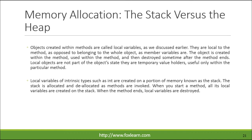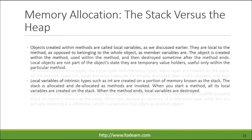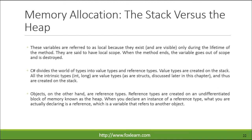Local variables of intrinsic types such as int are created on a portion of memory known as the stack. The stack is allocated and deallocated as methods are invoked. When you start a method, all its local variables are created on the stack. When the method ends, local variables are destroyed. These variables are referred to as local because they exist, and are visible, only during the lifetime of the method — they are said to have local scope. When the method ends, the variable goes out of scope and is destroyed.